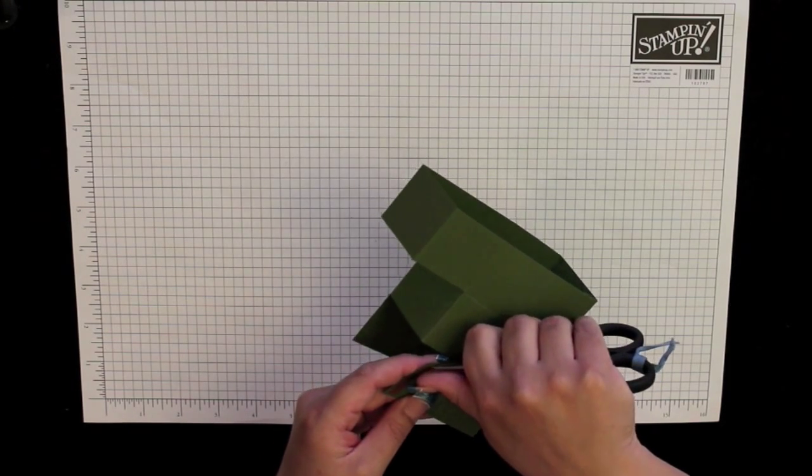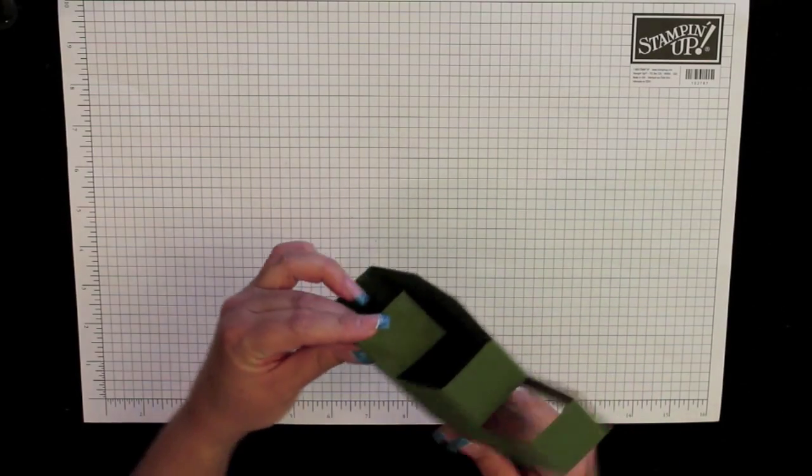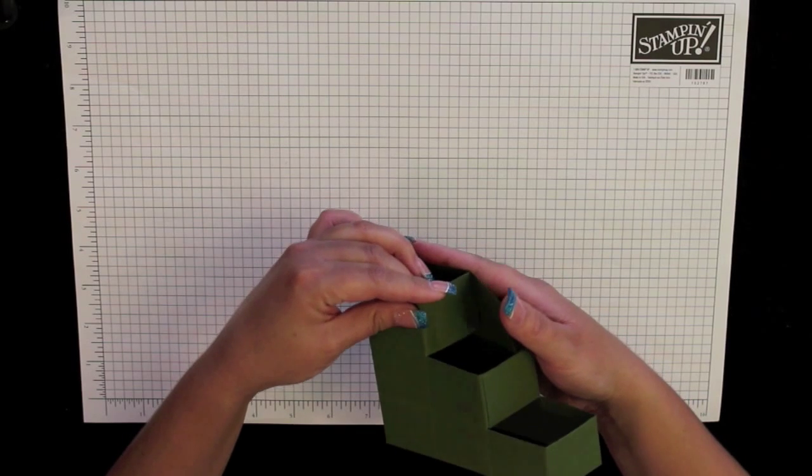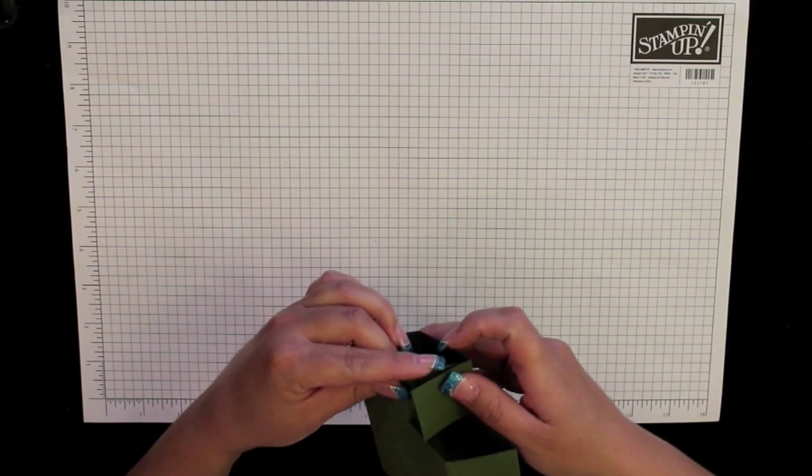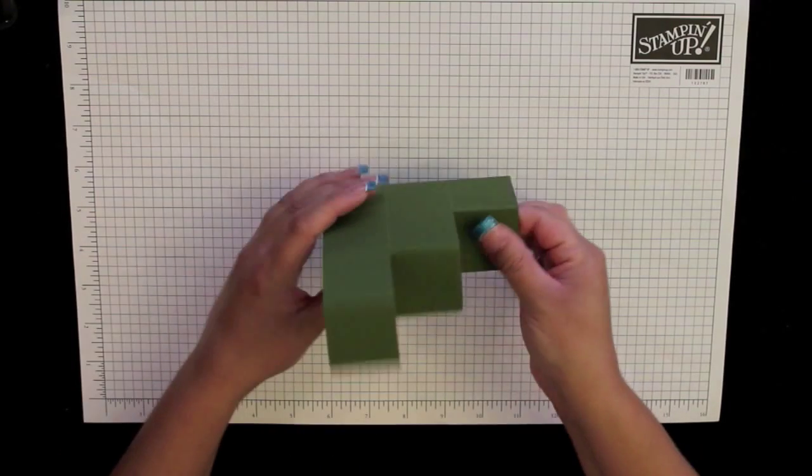The sticky strip just doesn't want to behave today. There we go. Again, fold the sticky side over, line up the edge with the score line on the other side. Make sure you line up these two edges as well and press them into place.